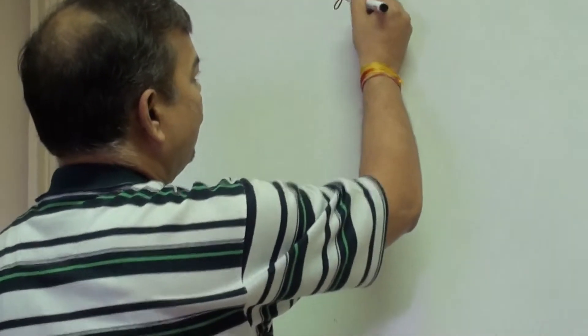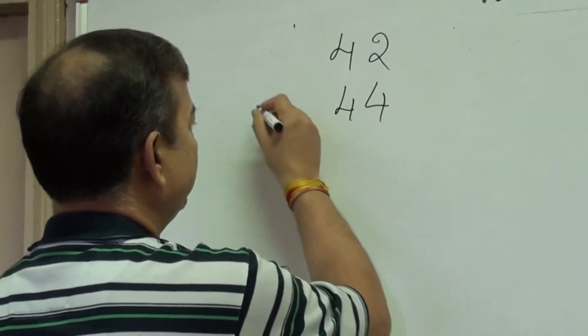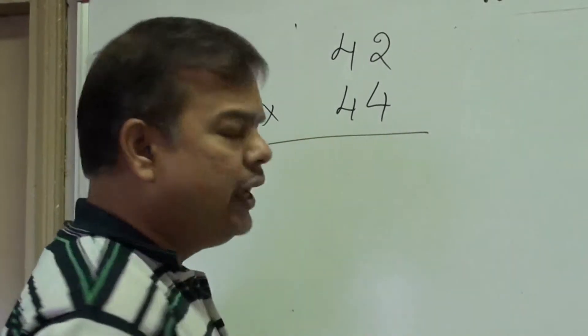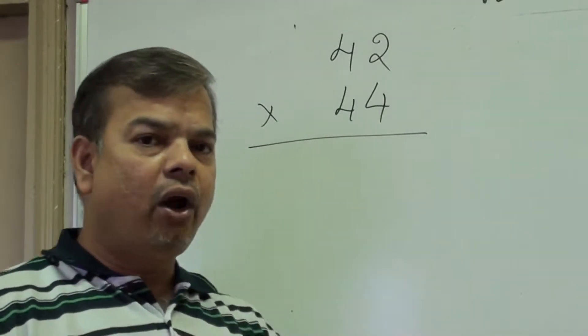In this session we will see whether it is possible to use the technique of multiplying two numbers which are close to base 10, in the case of multiplying two numbers which are not close to base 10. Let us take an example of multiplying 42 with 44. Both numbers 42 and 44 are not close to base 10.